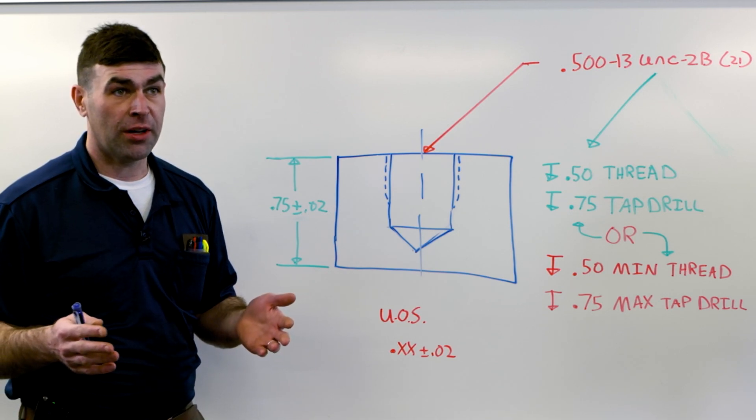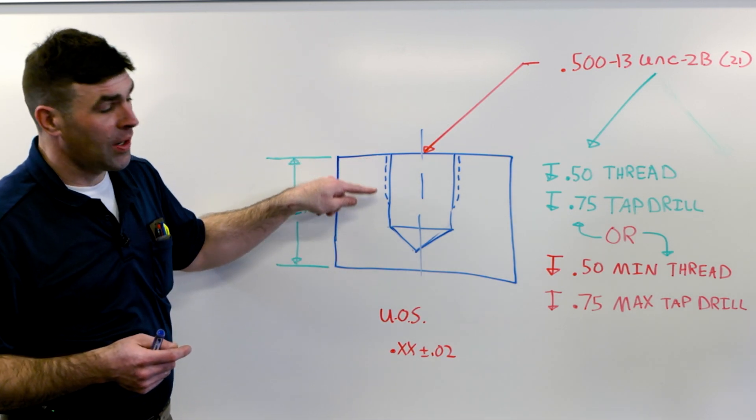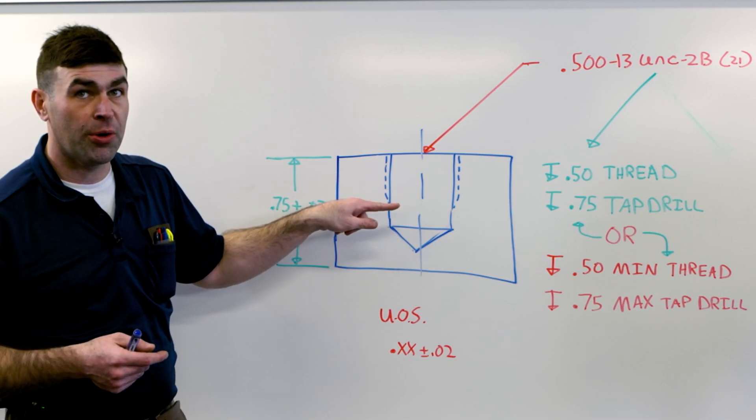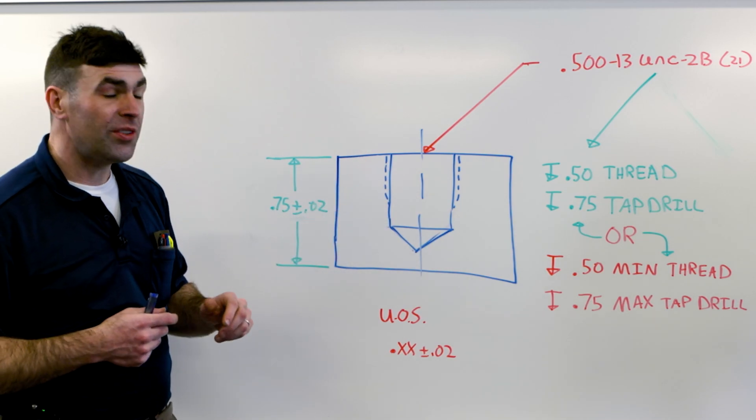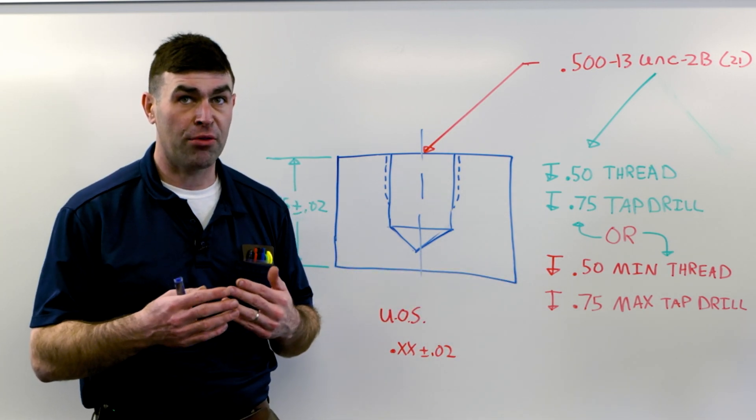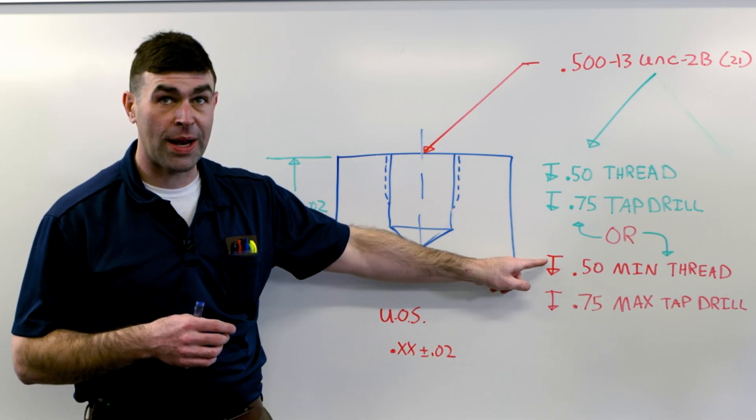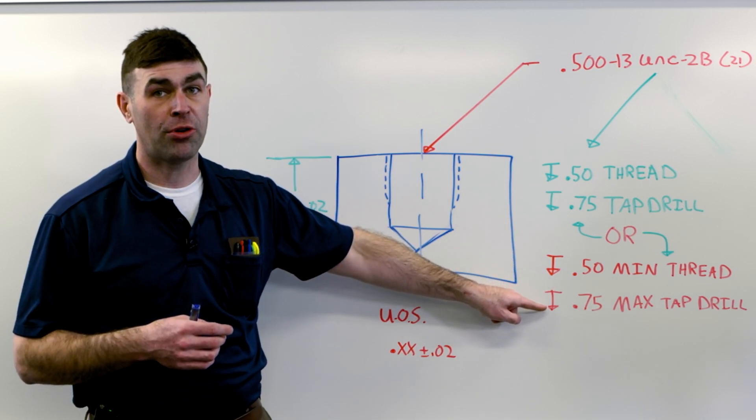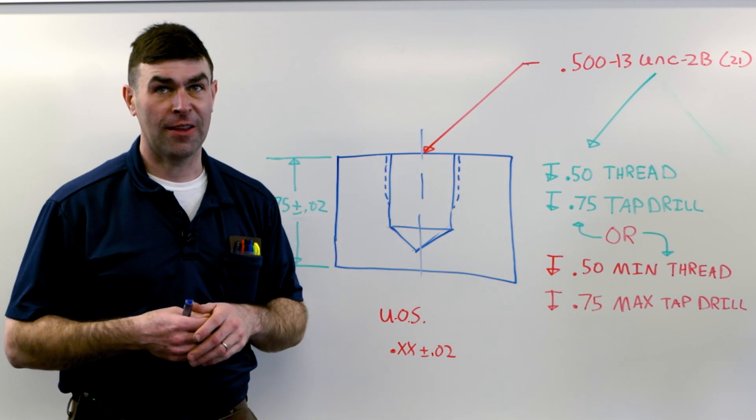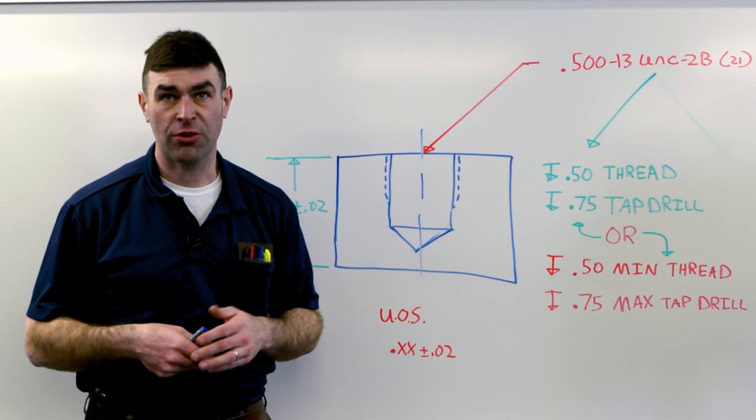So say you're running production and for whatever reason, you're not drilling far enough, as long as you can tap to the bottom of the drilled hole, you're good to go. So it just gives you flexibility. There's a quarter-inch between these where you have a range that either the thread can use or the tap drill can use, as opposed to kind of artificially limiting them in a way that really isn't functional in any way.